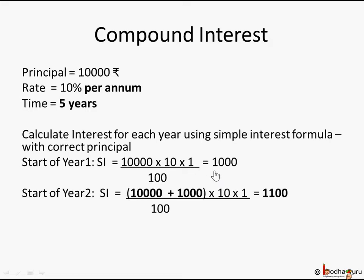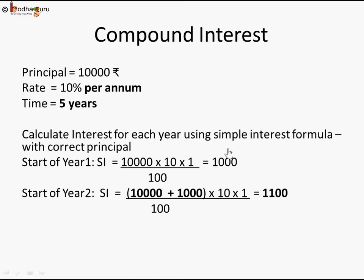The simple interest earned during year one is 10,000 into 10 into 1 by 100, which is 1,000 rupees. That 1,000 gets added for the start of year two, making 11,000 the new principal. For year two, the simple interest becomes 11,000 into 10 into 1 by 100, which is 1,100 rupees. The interest increased because the principal increased by adding the previous year's interest.